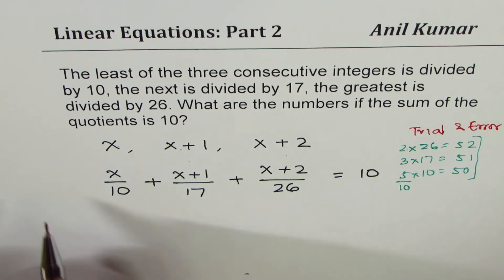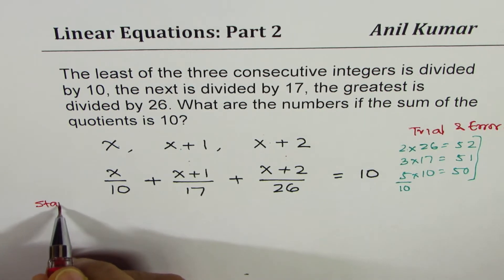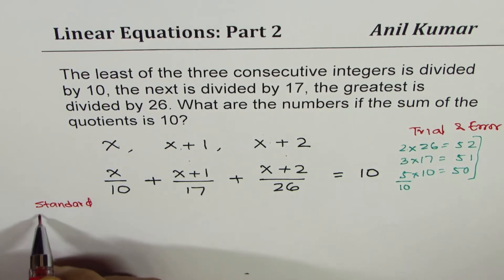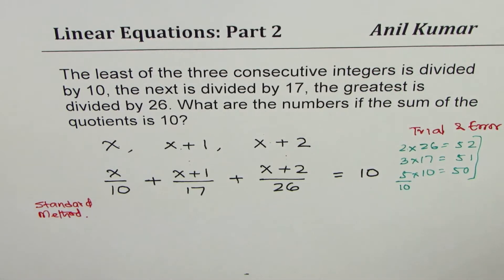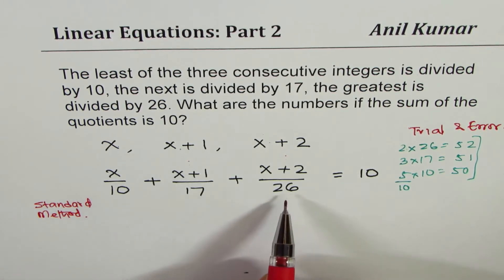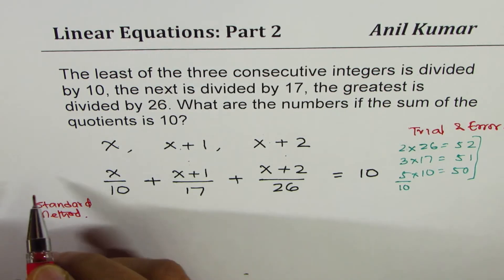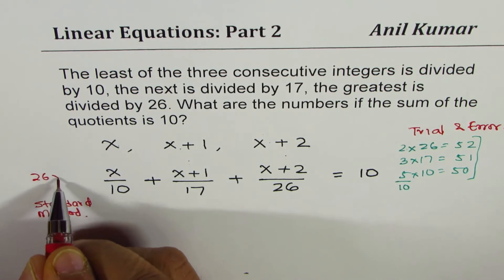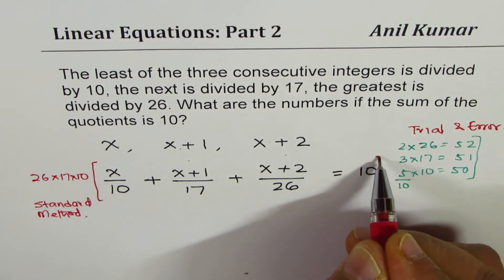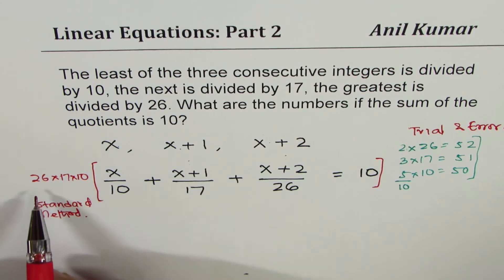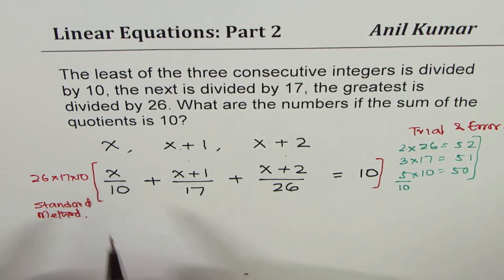But now, let's go to standard method. And that is, take a common denominator, multiply each term by the lowest common denominator. So we will not go into details, but say 26 times 17 times 10 is our number. So we'll multiply each term by 26 times 17 times 10. So the whole equation gets multiplied by this number, 26 times 17 times 10.